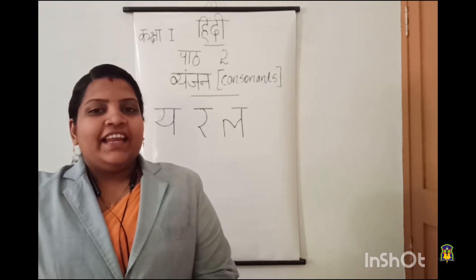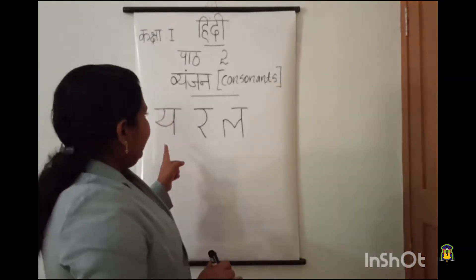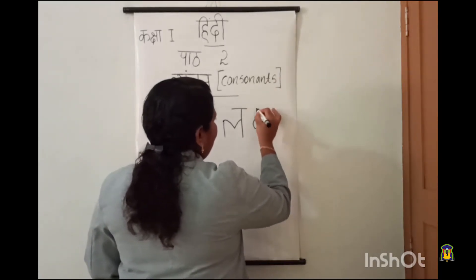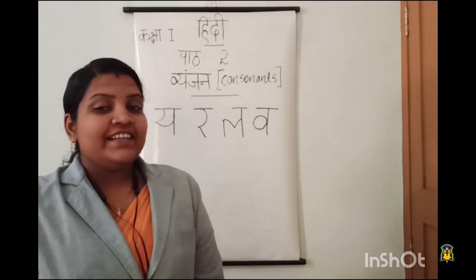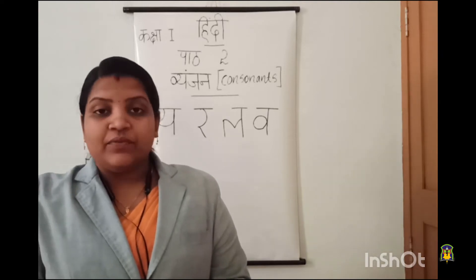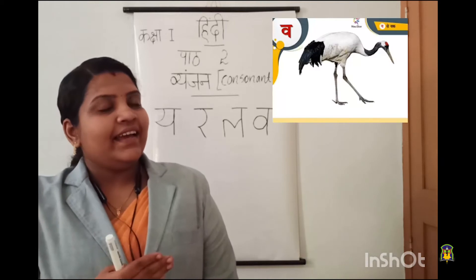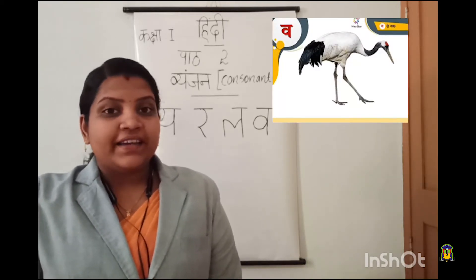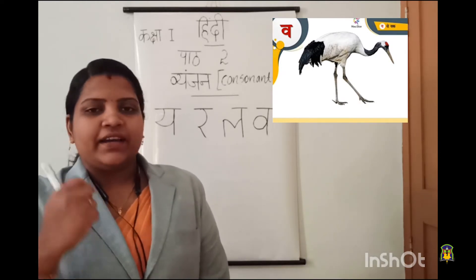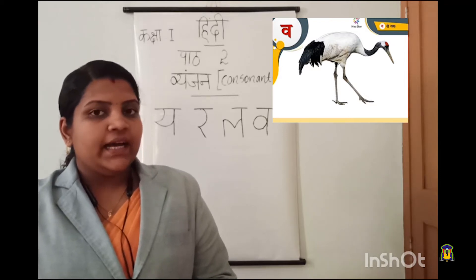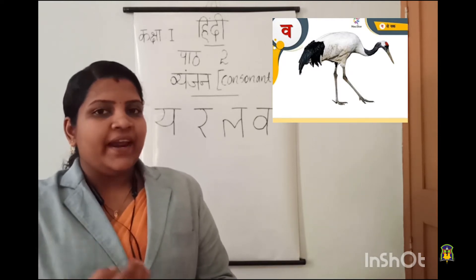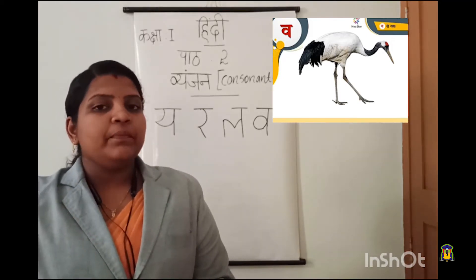Next we have the last letter. After ya, ra, la, the coming letter is wa. This is letter wa — say with me: wa. One more time louder: wa. Then next we will learn a word starting with wa. What is this? Yes, it is 'wak'. The first letter of wak is wa. So wa say wak. Do you know what is the meaning of wak? Yes — wak means a bird whose name is crane. Wa say wak, wak means crane. One more time louder: wa say wak, wak means crane.